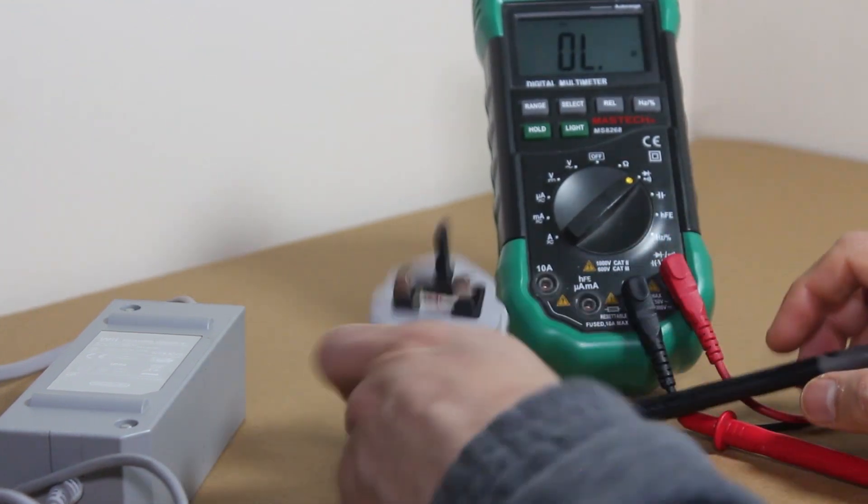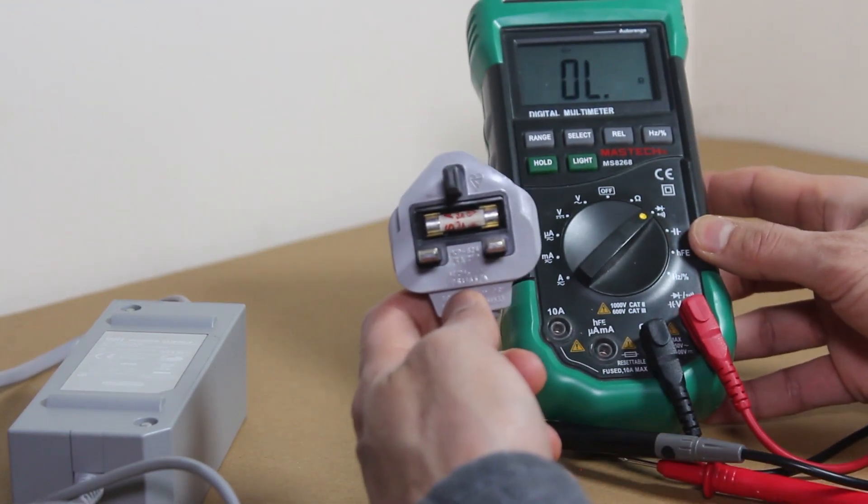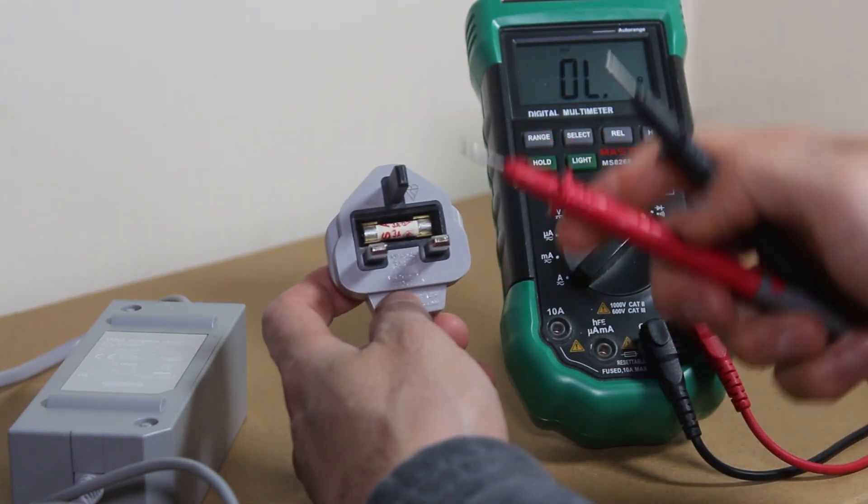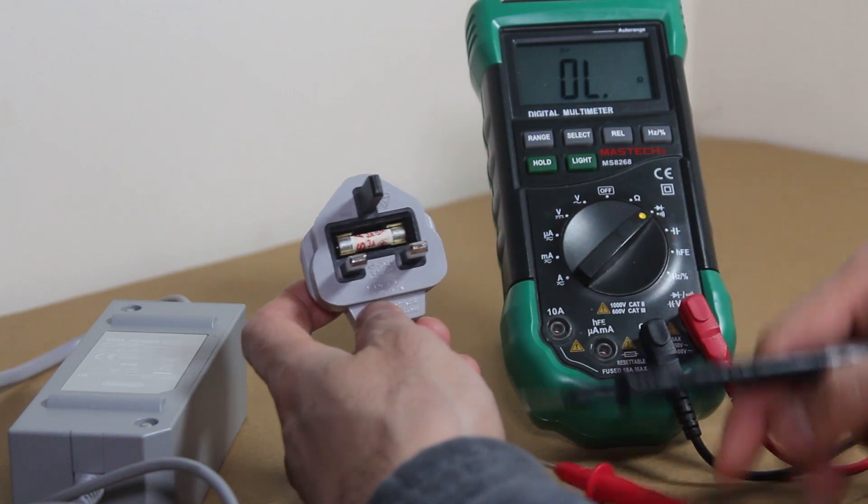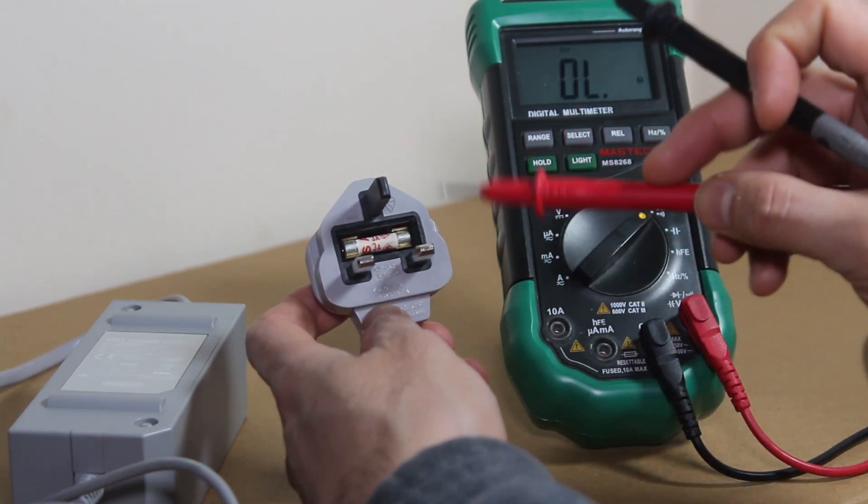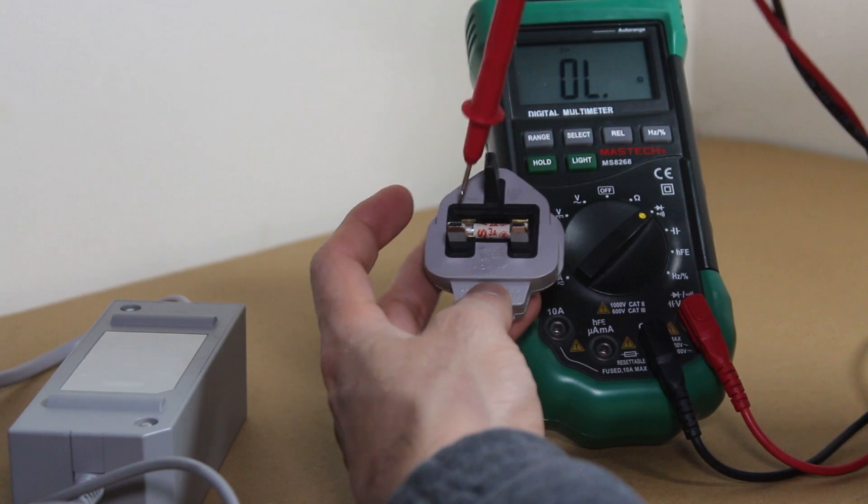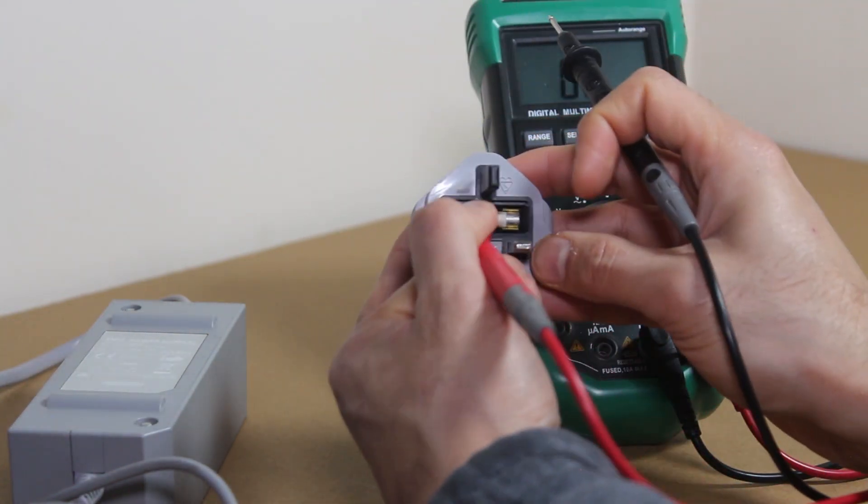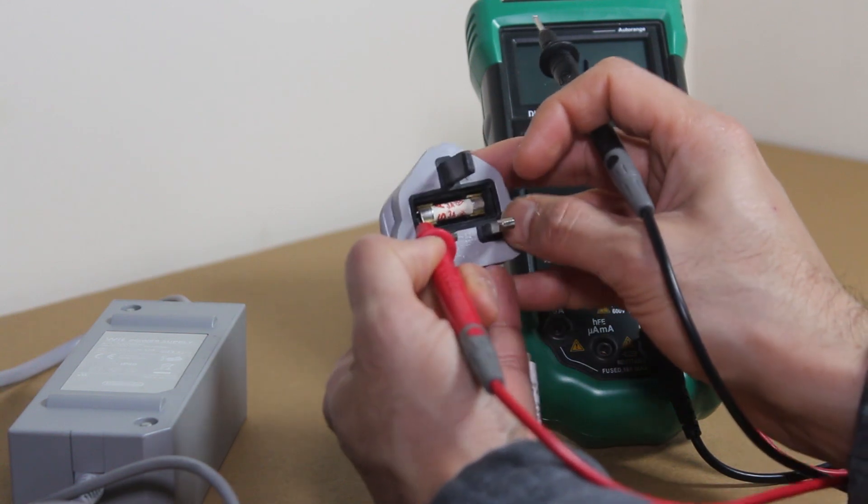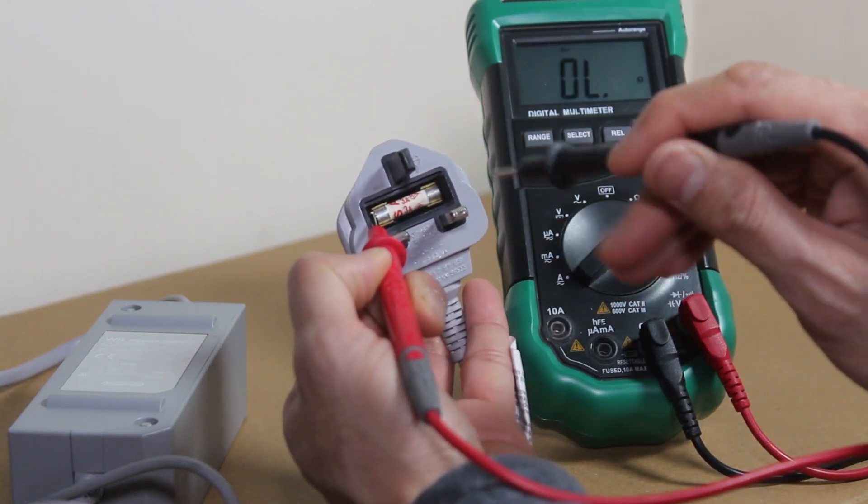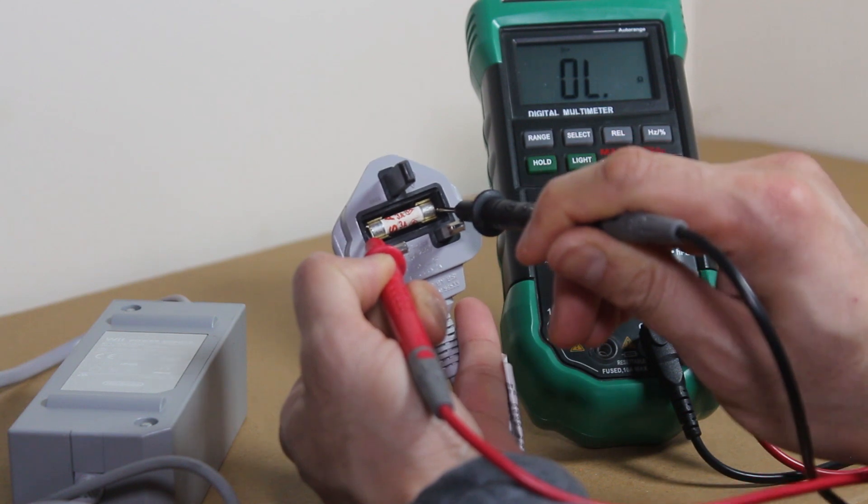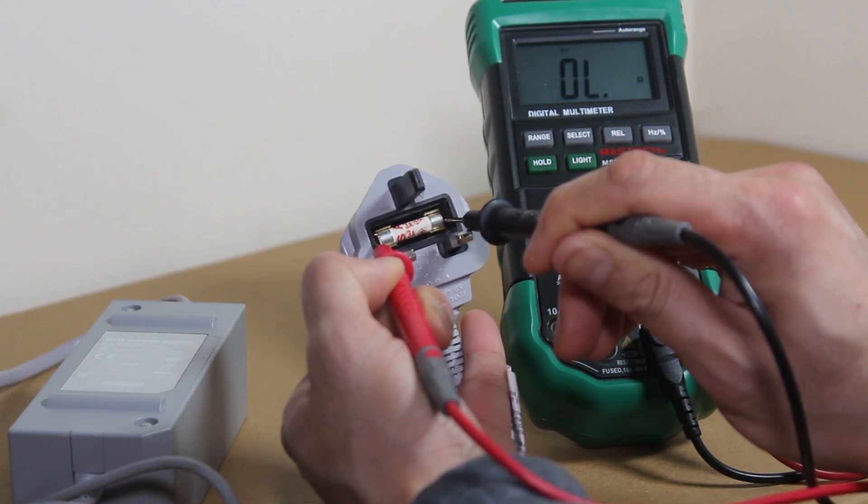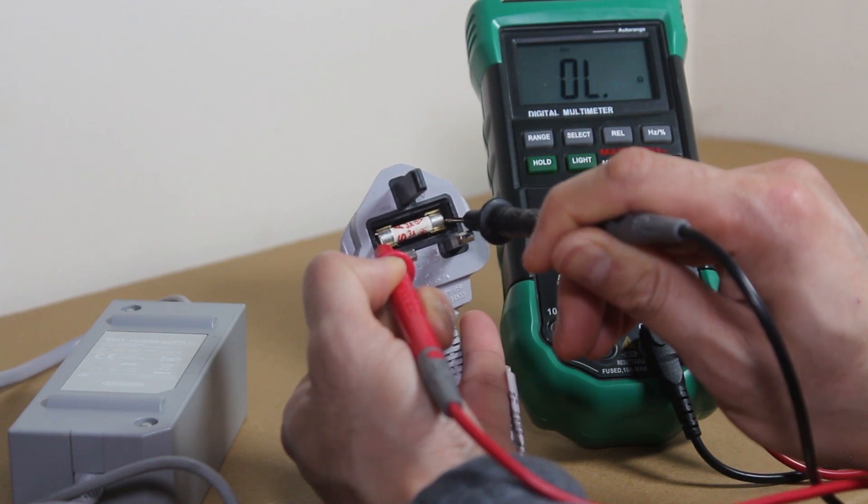Right. So all you want to do is you can test for the fuse inside the plug itself. You don't need to take it out. Some people do, not a problem. The orientation of the plus minus doesn't matter, red or black either way, because we're only testing for a connection between two points. So there is no need for positive or negative in this case. So touch the one end of the probe to one end of the fuse and the other one. And as you can see, there's no reading on the multimeter and there's no audible sound, which means this fuse is not working.